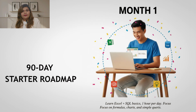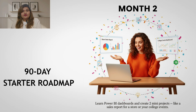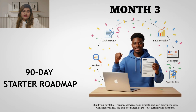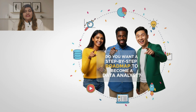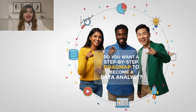90-day roadmap — here's a plan anyone can follow. Month 1: Learn Excel and SQL basics, one hour per day; focus on formulas, charts, and simple queries. Month 2: Learn Power BI dashboards and create two mini projects, like a sales report for a store or your college event. Month 3: Build your portfolio and resume, showcase your projects, and start applying to jobs. Consistency is the key — you don't need a tech degree, just curiosity and discipline. If you want me to create a detailed video with a step-by-step roadmap and practice series for each month, drop a comment below and I'll make it happen.